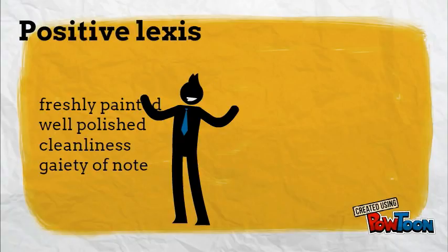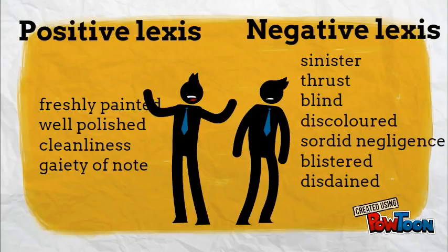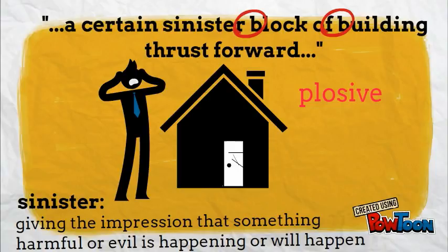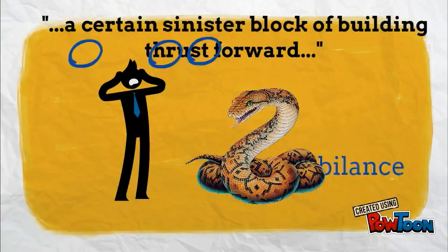The positive lexis used to describe the street is in stark contrast to the negative lexis used to describe the building that houses the door. The repetition of the plosive B sounds in 'a block of building' could complement the violence of the thrust associated with this personified building, and the sinister nature of it could be complemented by the repetition of the sibilant sounds.